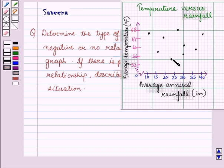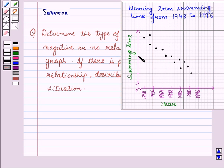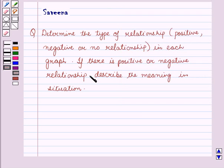Here is the first graph which shows average temperature with respect to average annual rainfall, and this is the second graph which shows swimming time from the year 1948 to 1996. If there is a positive or negative relationship, describe the meaning in the situation.